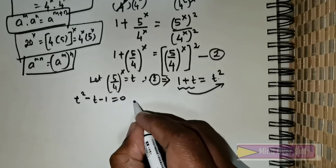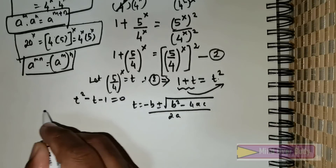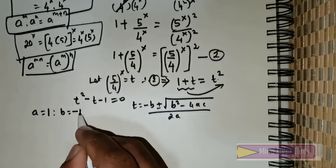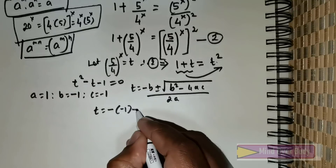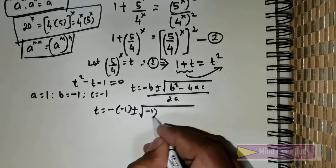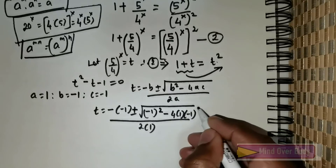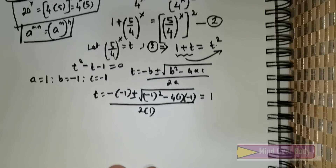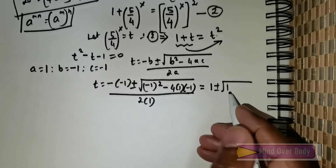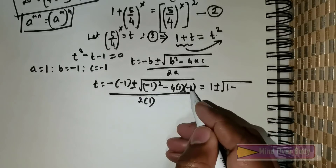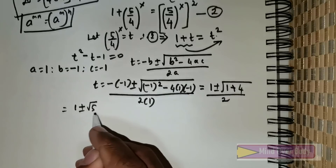Using the quadratic formula, t equals negative b plus or minus the square root of b squared minus 4ac, all divided by 2a. Here a equals 1, b equals negative 1, c equals negative 1. Substituting: t equals negative(negative 1) plus or minus the square root of (negative 1)^2 minus 4 times 1 times (negative 1), divided by 2 times 1. This simplifies to 1 plus or minus the square root of 5, divided by 2.